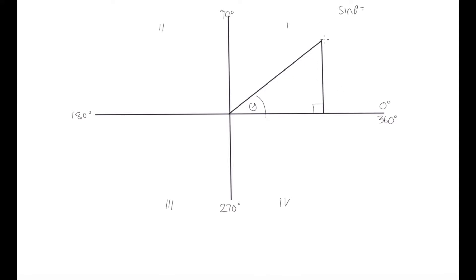Sine theta is equal to the opposite side over the hypotenuse. The opposite side has a value equal to y, because the line runs along our y-axis and corresponds to our y value at that point. So sine theta equals y over h, where h is our hypotenuse. Cosine theta is equal to the adjacent side over the hypotenuse, and the adjacent side can be described as x, since its length equals our x value at that point. So cos theta equals x over h. And tan theta equals opposite over adjacent, so tan theta equals y over x.